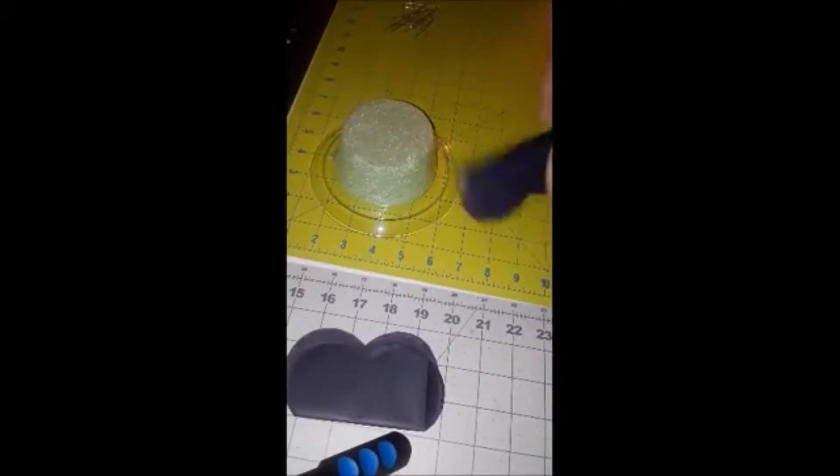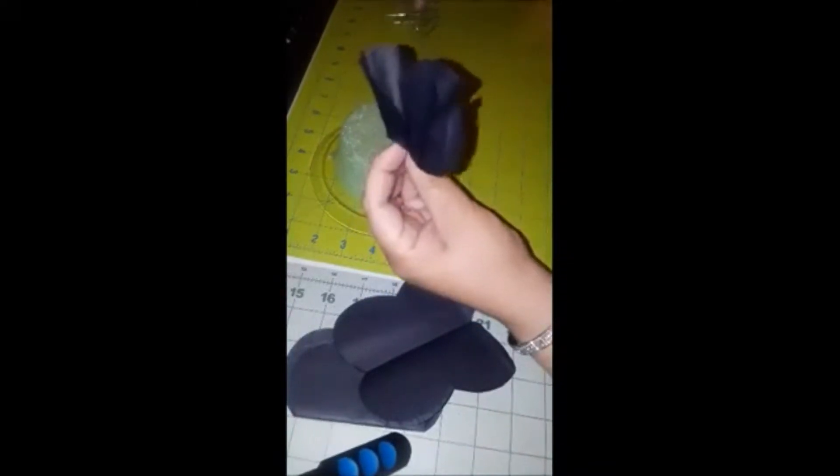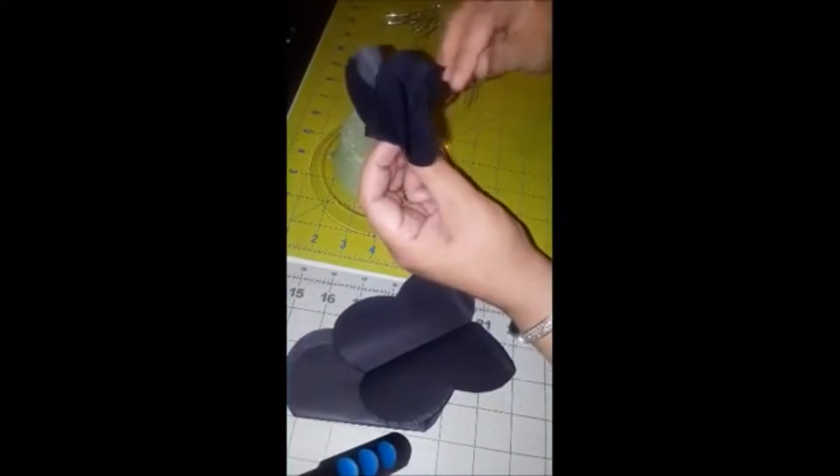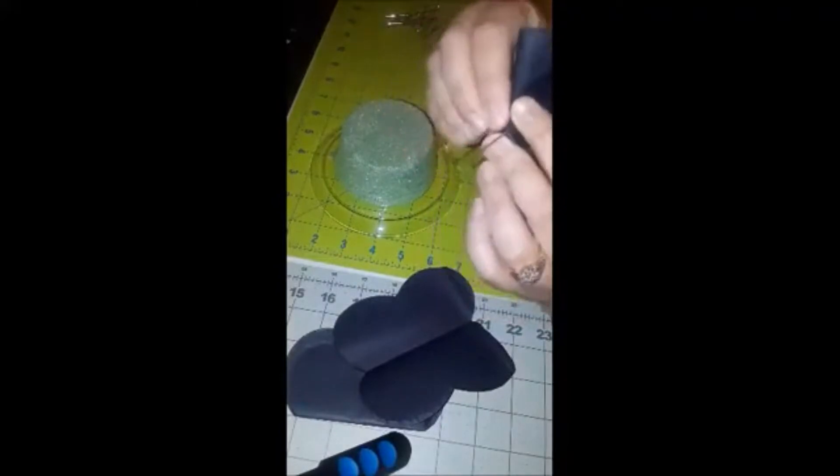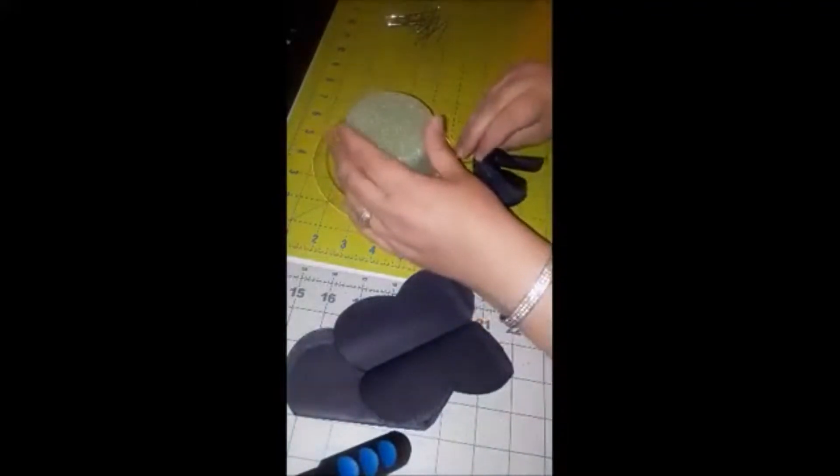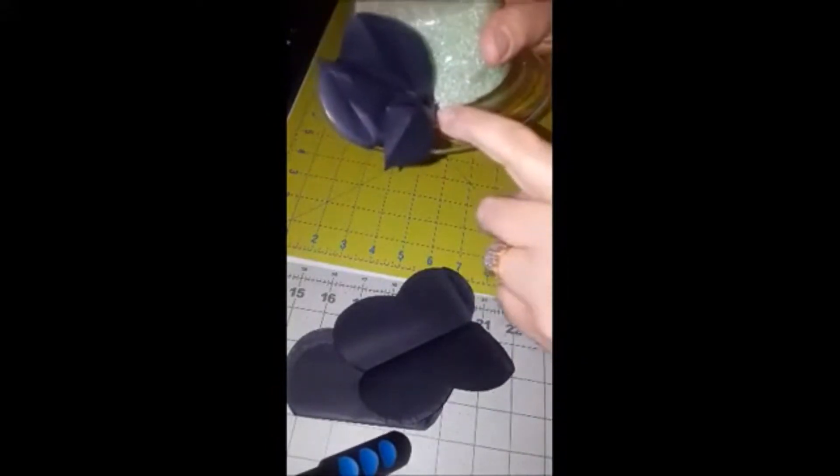We're going to start with one piece of tissue first. Grab it and gather it at the bottom like so, pull up all the ends, insert your pin like that, and start at the bottom of your foam.